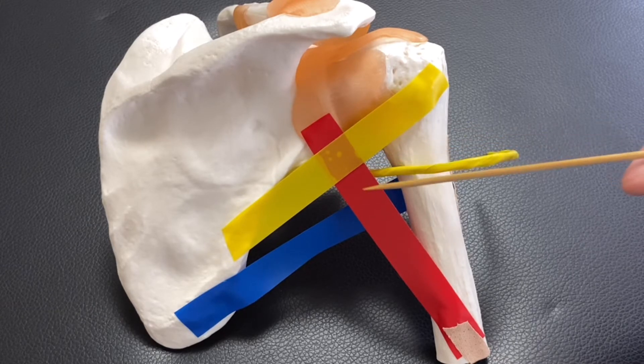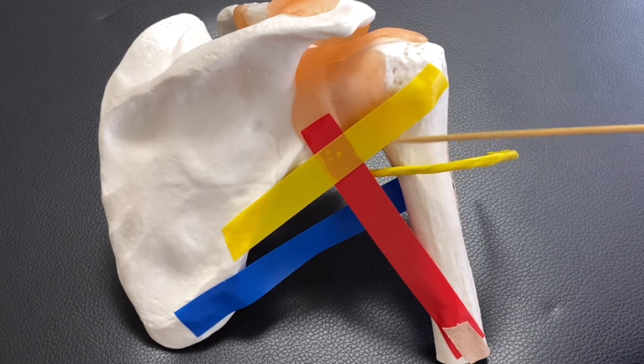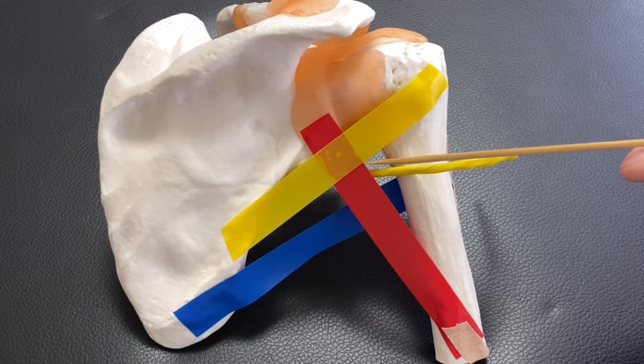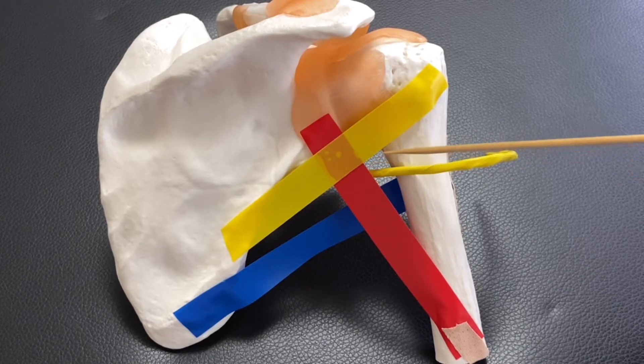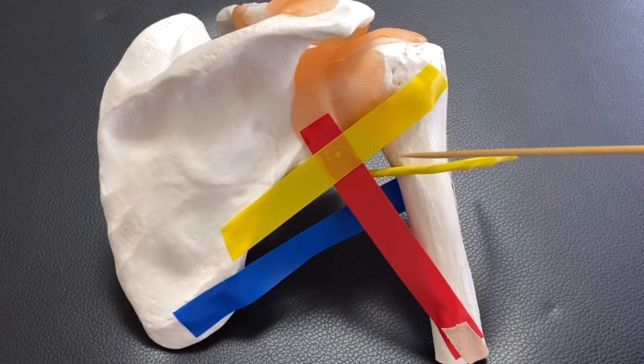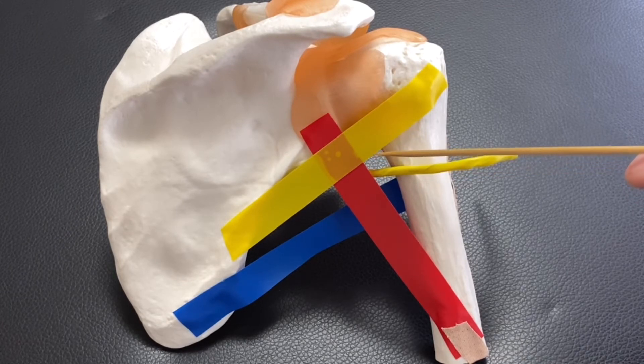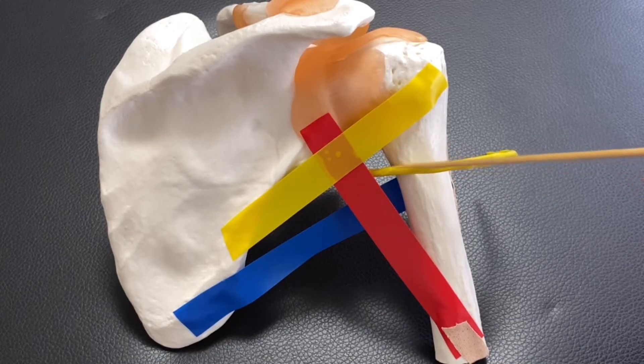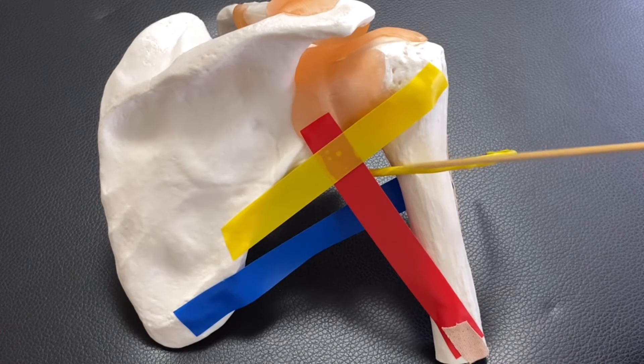From these four structures, there is a canal here. This is the quadrilateral space. The axillary nerve penetrates the quadrilateral space. So this is a very key place in the shoulder.